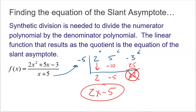So we'll have a line in the graph — not a real line, but an invisible one represented by a dotted line. The function cannot cross that slant asymptote.